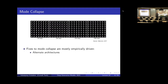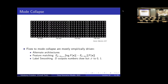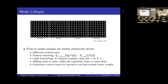Mode collapse is a problem with various fixes: changing the architecture, feature matching — where instead of just comparing discriminator scores you look at the activations of the discriminator neural network and try to make the distribution of those vector-valued activations different — label smoothing (encoding classes as values other than 0 or 1), and adding noise to the data.